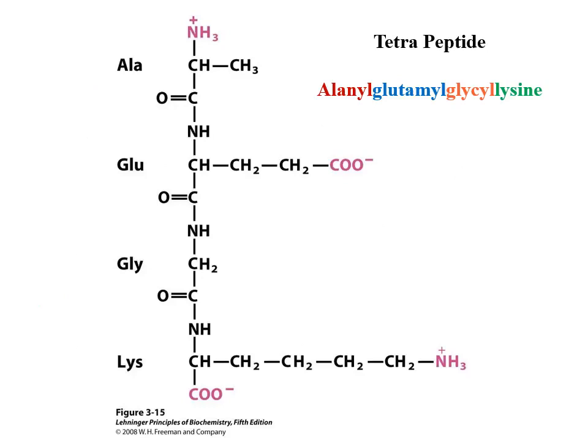Another example of a peptide is a tetrapeptide composed of alanine at the N-terminal, followed by glutamate, glycine, and glycine at the C-terminal. So we can write it as alanyl-glutamyl-glycyl-glycine.